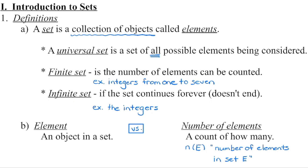A finite set, for example, would be all integers from one to seven — we can actually count them: one, two, three, four, five, six, seven. An infinite set would just be a set such as the integers; it is not possible to count all elements within that set. Venn diagrams can be used to visually show how we classify the elements within a set. We can also use them to represent the number of elements we have within a set, and the notation is really key here.